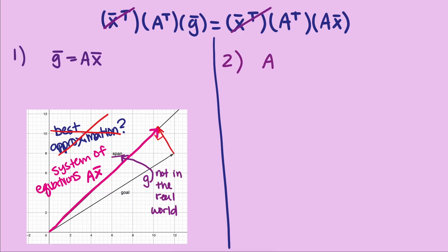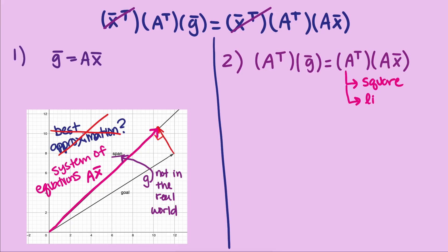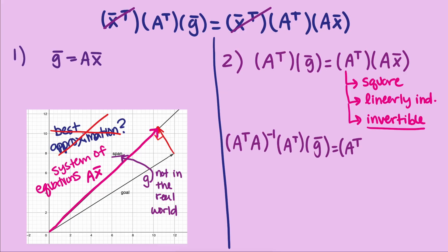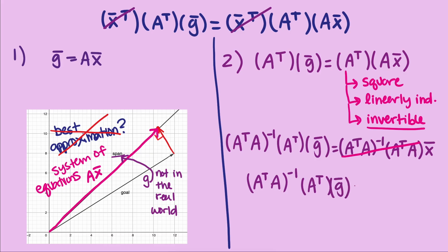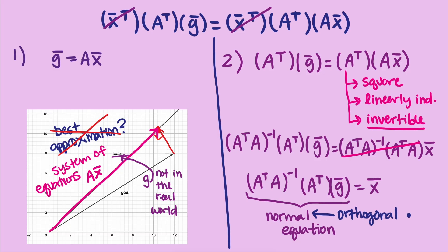The second case is where A-transpose times g equals A-transpose times Ax. This is a situation where we can solve for X bar. A-transpose A is always a square matrix, and if the columns of A are linearly independent, then A-transpose A is invertible. So we can solve by multiplying by the inverse of A-transpose A on the left of both sides. The left side now gives a straightforward equation for calculating X bar from the data matrix A and the goal vector g. What we have derived is called the normal equation. It is called the normal equation because it is the solution to the orthogonal projection problem that emerges in best approximation problems.